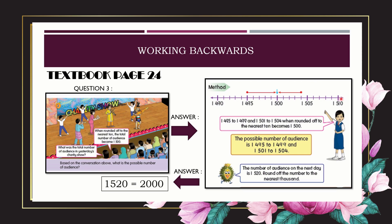How to answer: use working backwards. First step, we draw a number line. We find the important information — the keyword is 1,500. We write 1,500 in the middle of the number line. The next keyword is nearest ten, so each interval is 5. We go minus 5: 1,495 then 1,490. On the other side, 1,505 then 1,510.